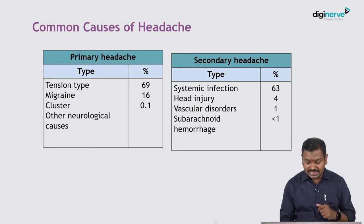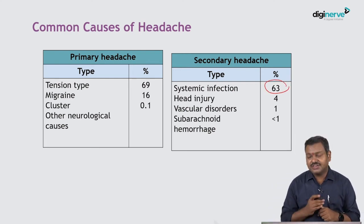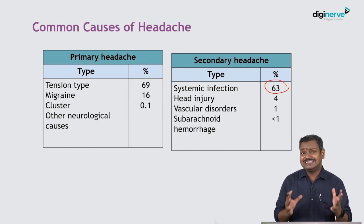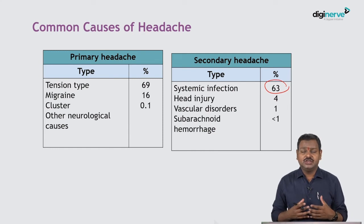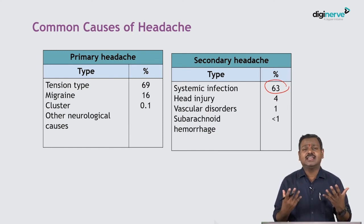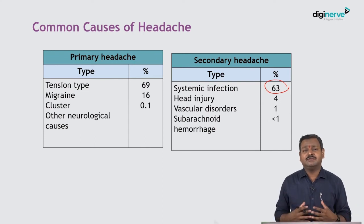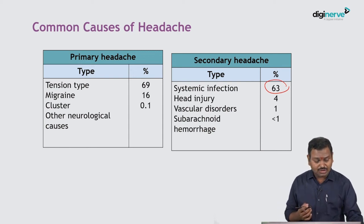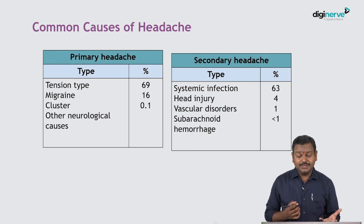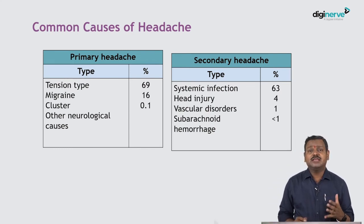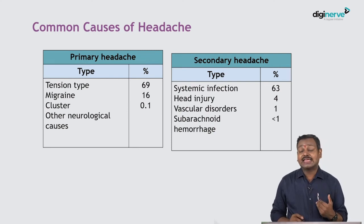For secondary headaches, the most common etiology is systemic infection, which accounts for around 63% — fever itself can precipitate headache through inflammatory cytokines released during infection, causing what is called a toxic headache. Head injury is the second most common cause. Vascular diseases, including stroke and subarachnoid hemorrhage, are also important causes of secondary headache.